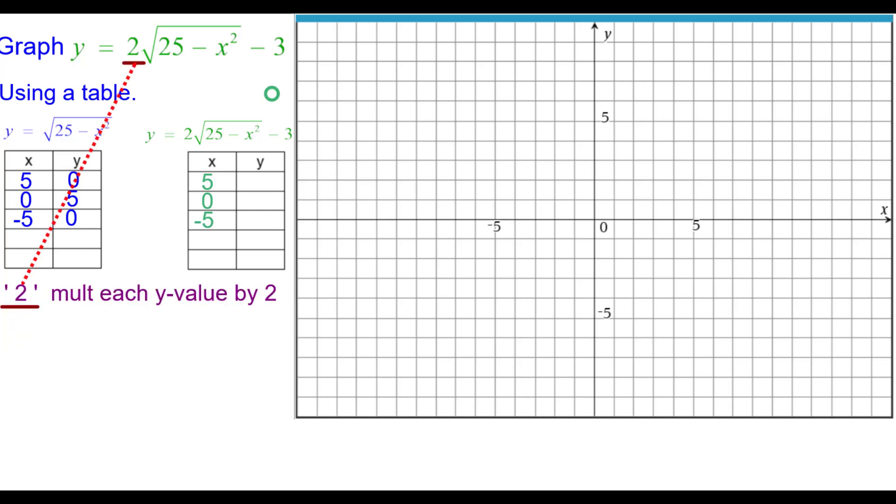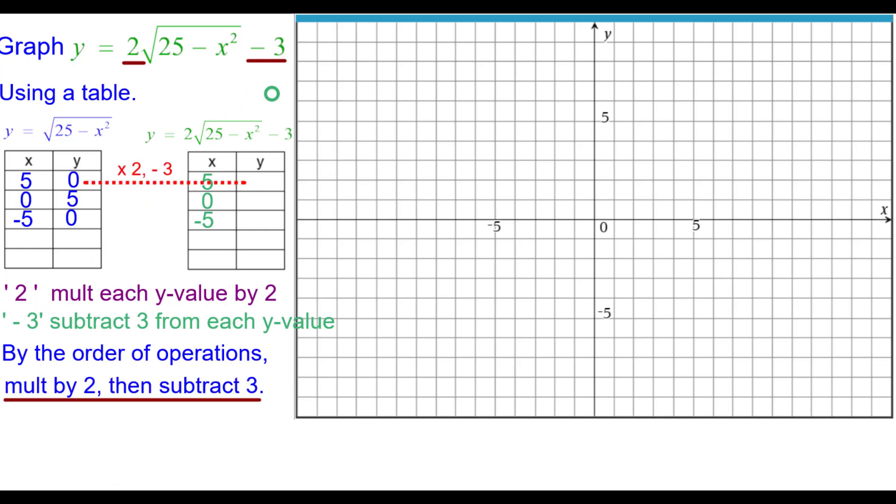We have to double the y values and we have to subtract 3 from each y value. By the order of operations, we multiply first and then subtract. So we're going to multiply by 2, then subtract 3.